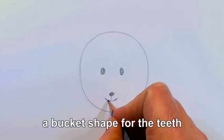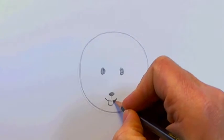And for his buck teeth, I'm going to draw two of them. I'm going to draw them like it's one, almost like it's a little bit of a bucket shape. Seems to work well.